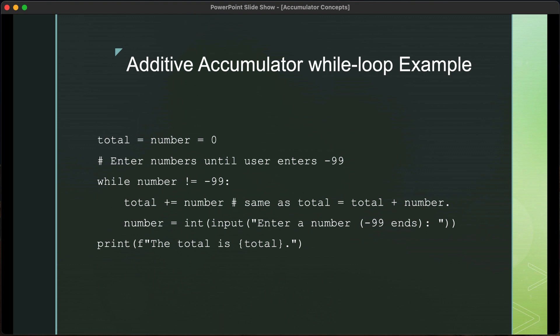So, again, at the first line, we're going to initialize the value of total and number to be 0 here. So, both total and number get the value of 0. The while loop allows us to iterate until the entered number is negative 99. So, when negative 99 is entered, that's when the loop terminates.